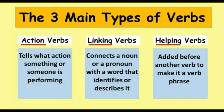The main three types of verbs are: action verbs, linking verbs, and helping verbs. Action verbs tell what action something or someone is performing. Linking verbs connect a noun or pronoun with a word that identifies or describes it. Helping verbs are added before another verb to make it a verb phrase. So there are three main types: action, linking, and helping.